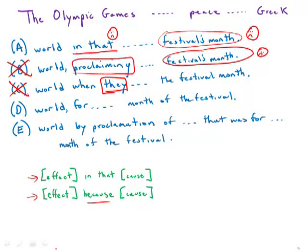We get to D and we see the word 'for,' which is used here as a synonym of the word 'because.' So there was peace in the world for this time — 'for they proclaimed a sacred truce,' or 'for a sacred truce was proclaimed.' That is an excellent explanatory word, so we like choice D.